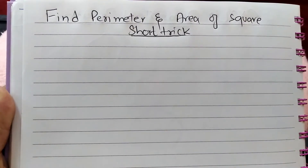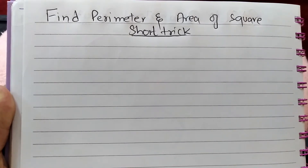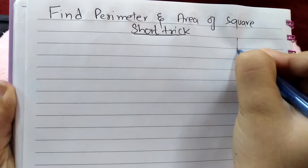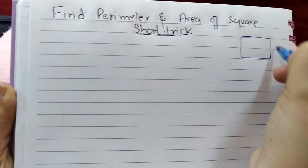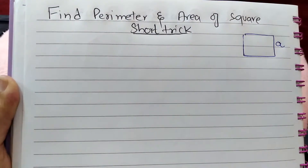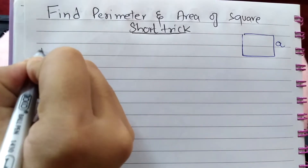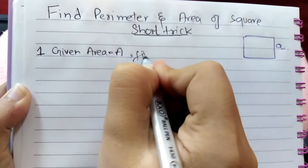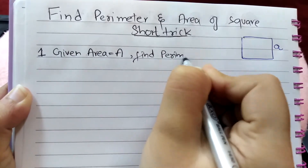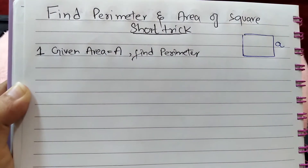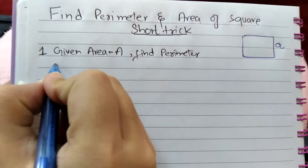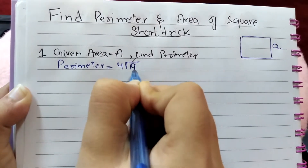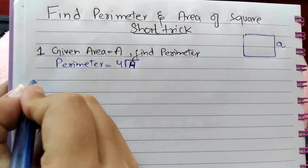Assalamu alaikum viewers, welcome to my channel NTS Guru. In this lecture you will learn how to find perimeter and area of a square — a shape having four equal sides. If each side is represented by 'a' and area is given as 'a', the short trick for finding perimeter is: perimeter is given by four times the square root of the area.